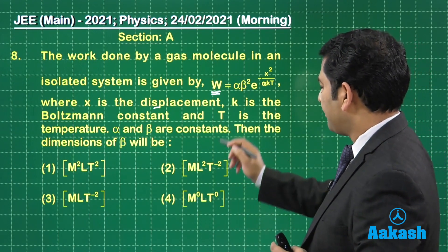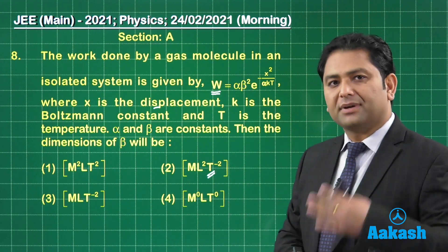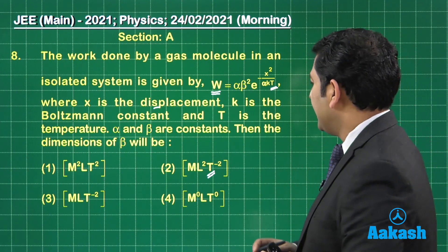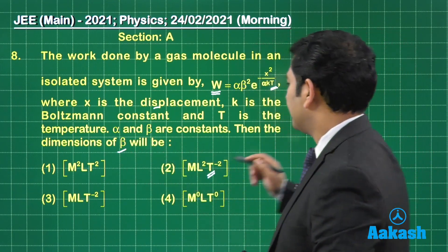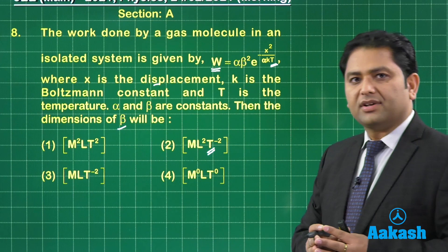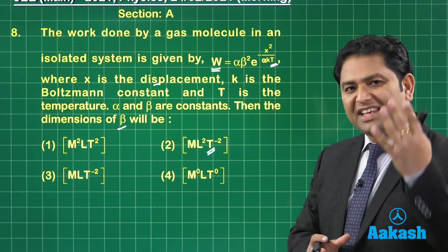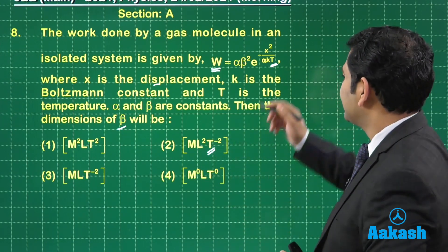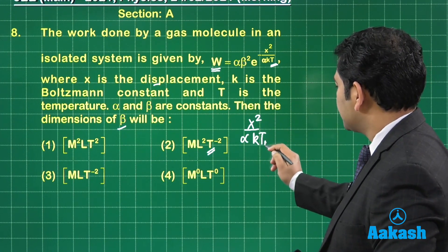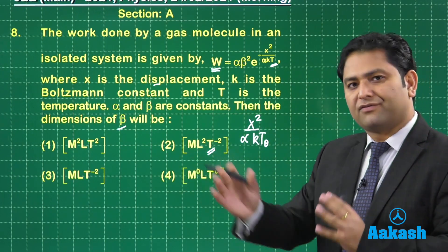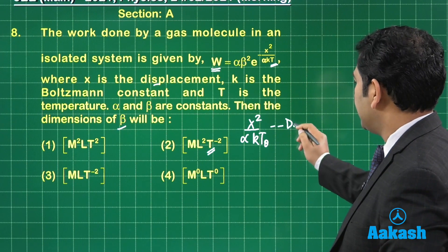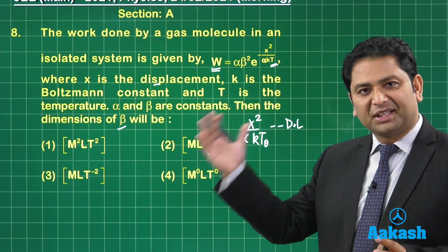K is the Boltzmann constant and capital T is the temperature. Don't confuse this capital T with the dimensional formula where capital T is time. Here capital T is temperature. We need to find the dimension of beta. Have a look at the expression. The strategy is very simple: the power of E is dimensionless. So what comes in the power of E? X squared by alpha KT. Let me write a subscript theta to distinguish it from time. This is dimensionless.